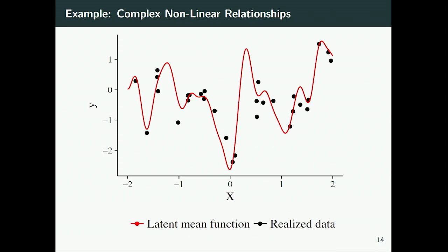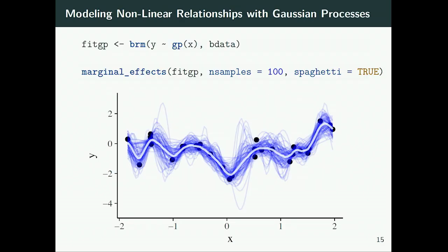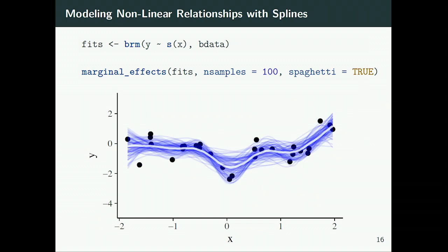Another example: modeling nonlinear relationships. This is a simulated nonlinear relationship using Gaussian processes — the red line is the true nonlinear function and the black points are the realized data. We can easily fit that in BRMS using Gaussian processes by putting GP around the variable. We can do this in a multivariate manner and model different Gaussian processes for different groups. Since GP doesn't scale well to large datasets, we can also use splines by putting in the S function — it fits the spline and accurately models the nonlinear relationship.